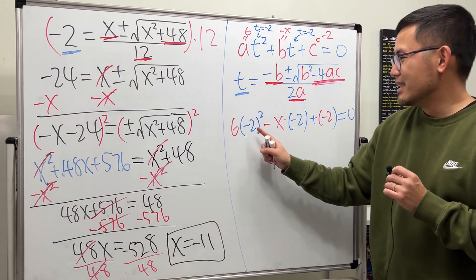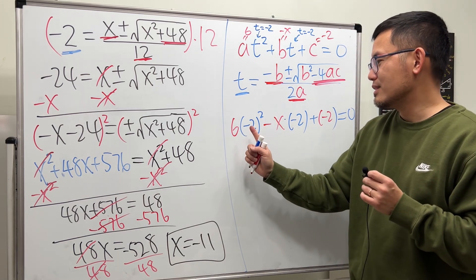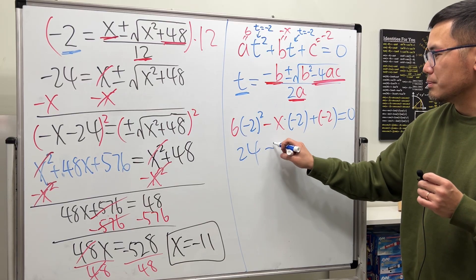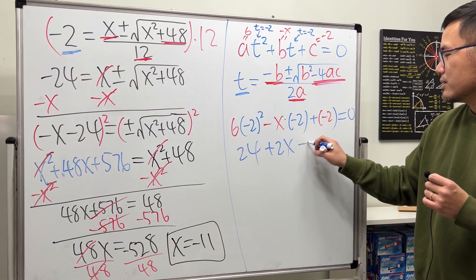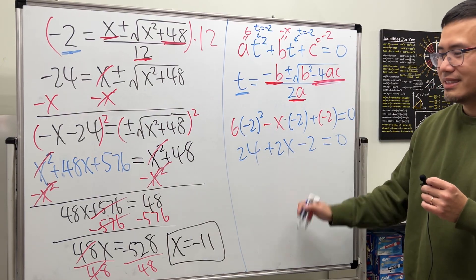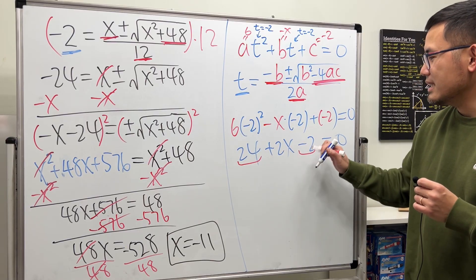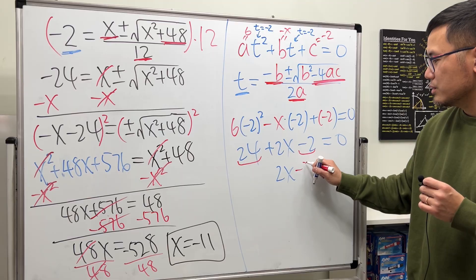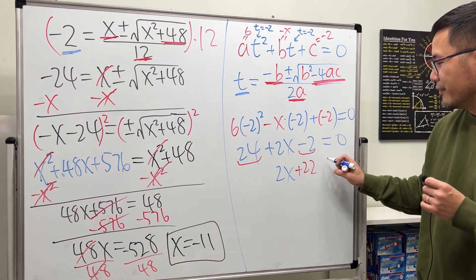Now, work this out. This is 4 times 6 is 24. Negative x times 2 is plus 2x. And then, minus 2 equals 0. Combining this and that, that's 2x and then this and that is positive 22. Equals 0.